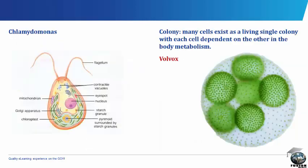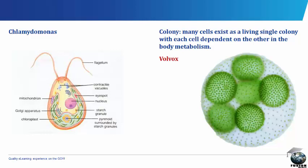The Chlamydomonas possesses a flagellum, contractile vacuoles, eyespot, nucleus, starch granules, and a pyrenoid surrounded by starch granules. It also possesses mitochondria, Golgi apparatus and chloroplasts.